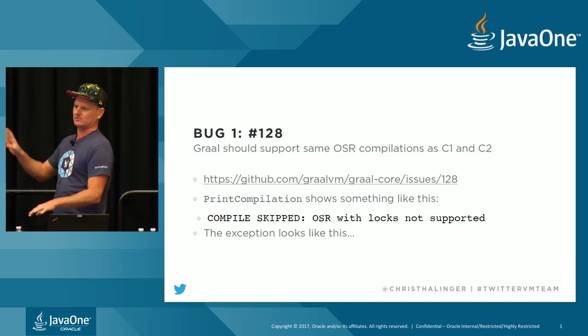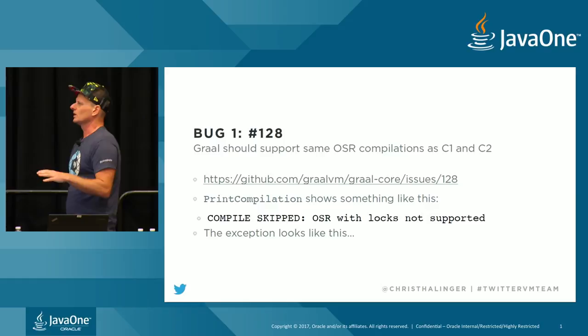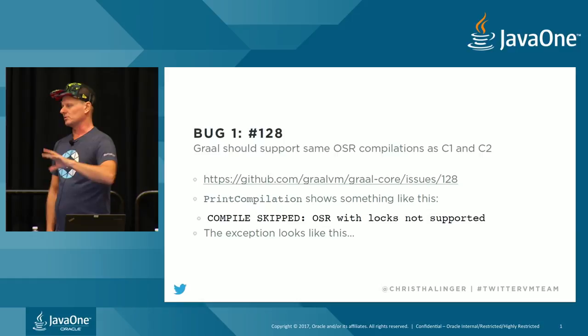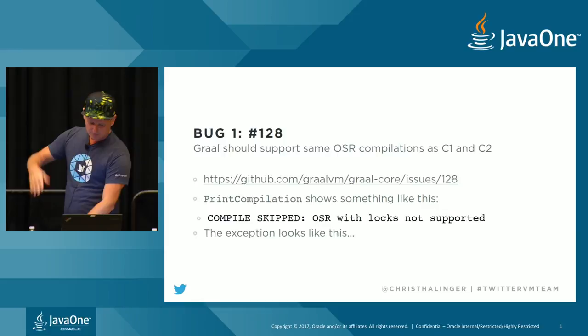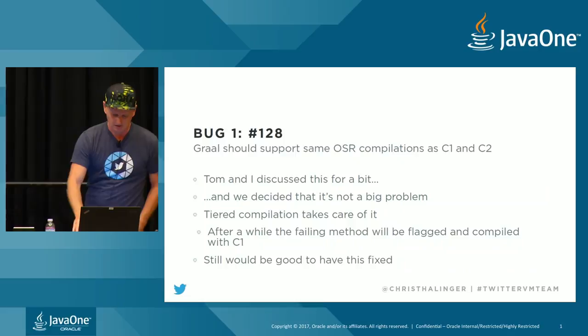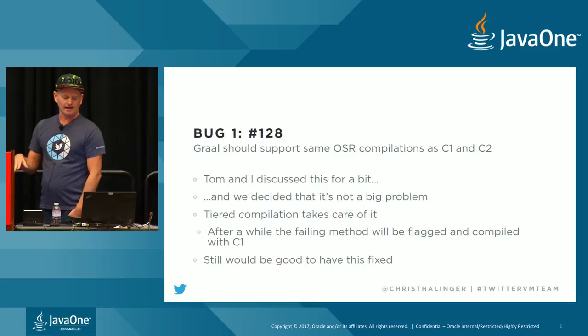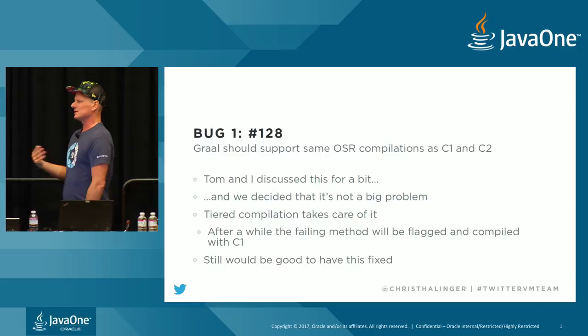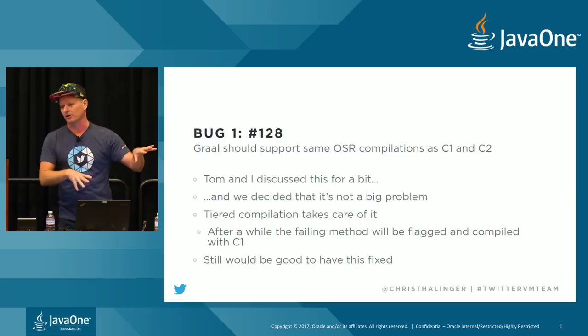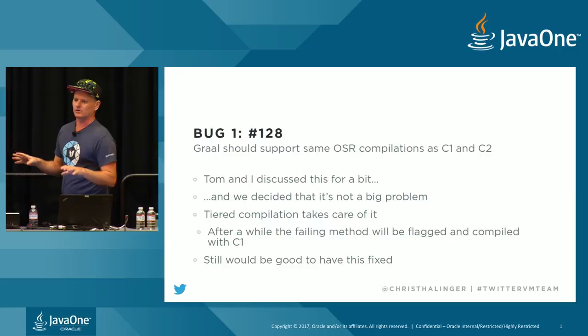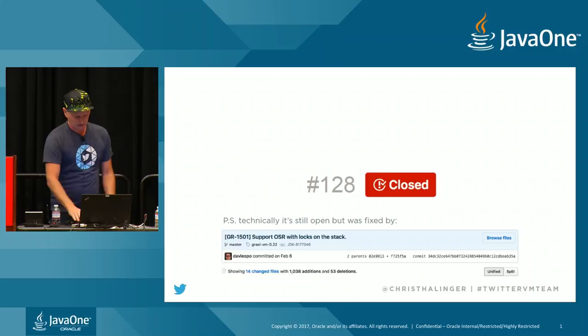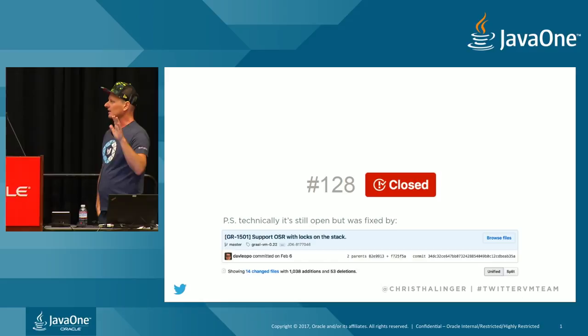There was this recurring issue that on-stack replacement compilations didn't work because Graal didn't support OSRs with locks — with synchronizations. We filed a bug for it. We discussed it with Tom Rodriguez and decided at that time it wasn't really a big issue, because basically Graal would fail a bunch of times and then say it can compile when we'll take care of it. The methods affected weren't important for us, so we didn't care too much. At some point someone fixed it, and since then it works.